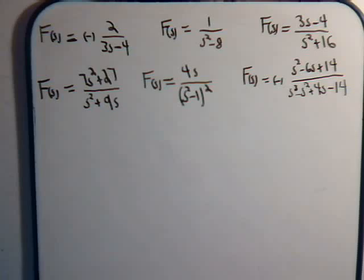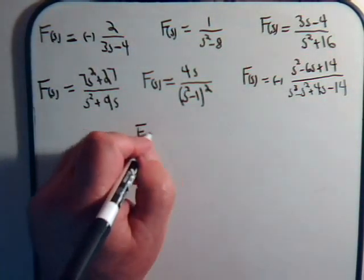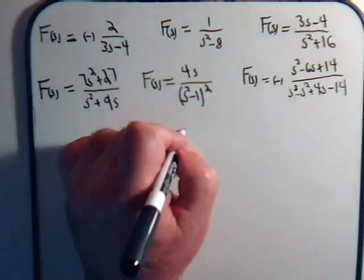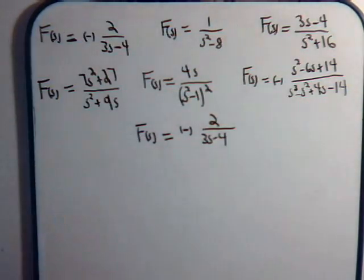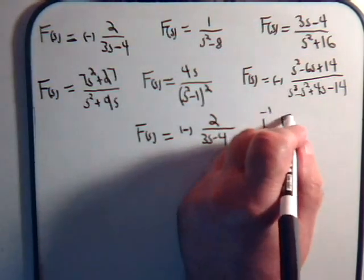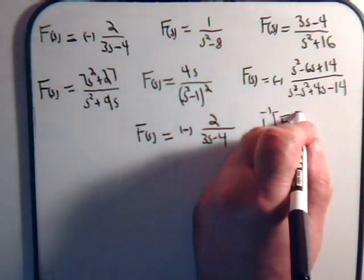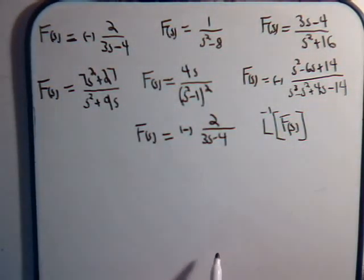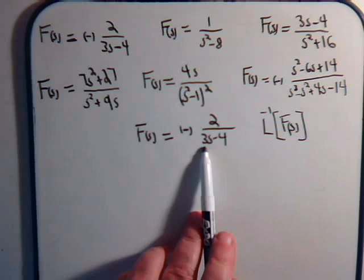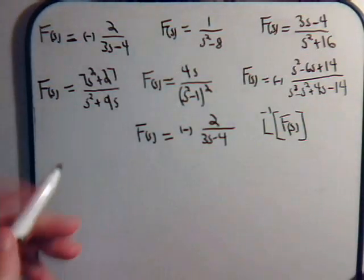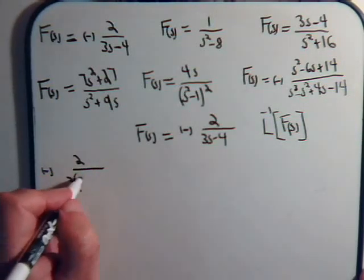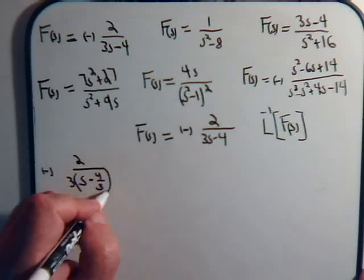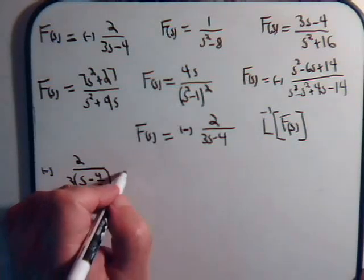Our first one is f of s equals minus 2 divided by 3s minus 4. And we want to find inverse Laplace transform. So if you look at your table of transforms, there is none that we have listed where s has a coefficient other than 1. So we factor the 3 out, and this would be minus 2 over 3 times s minus 4 thirds.